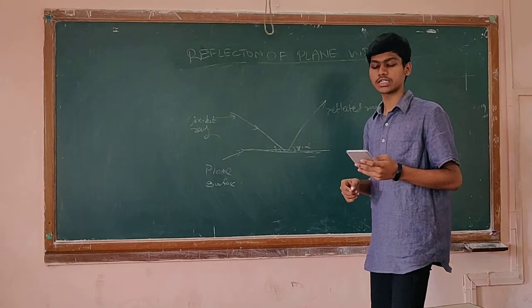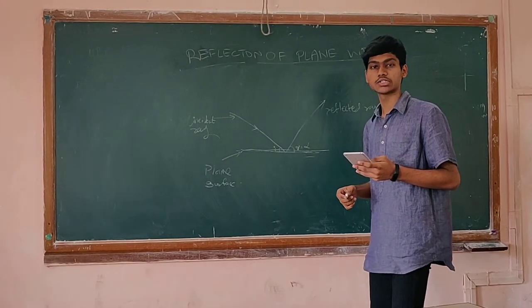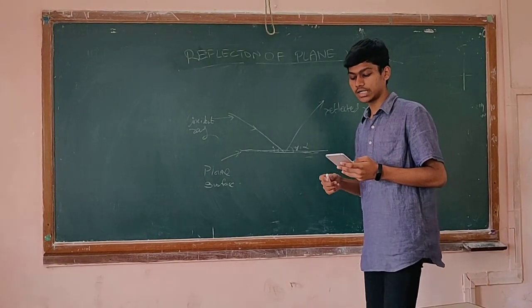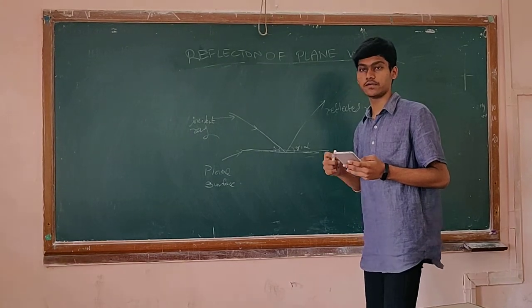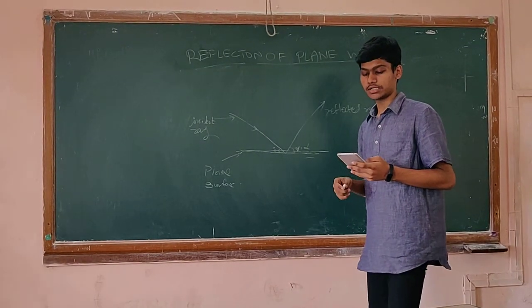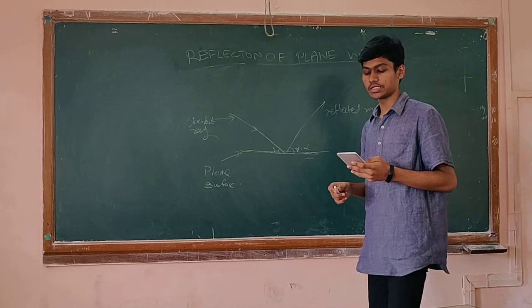It is illustrated that each and every point of a wavefront acts as a source of secondary wavelets. The secondary wavelets transmit at the velocity of light in the same medium.